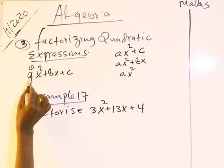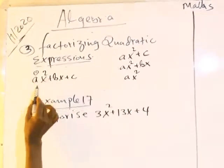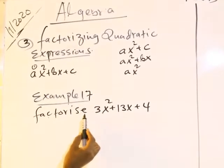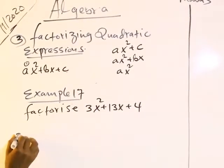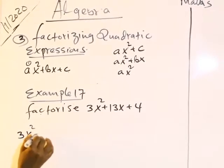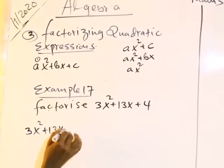We started to factorize 3x²+13x+4. We started to say, 3x²+13x+4.